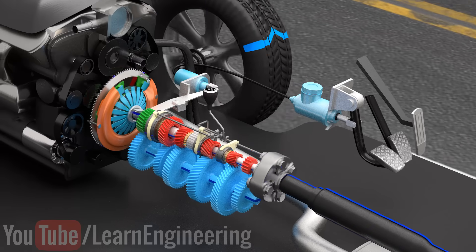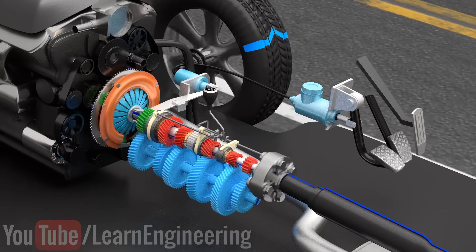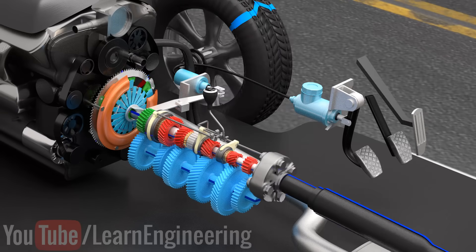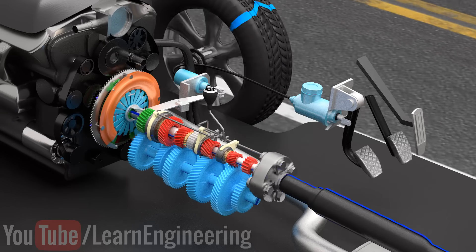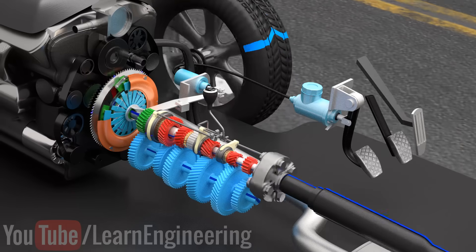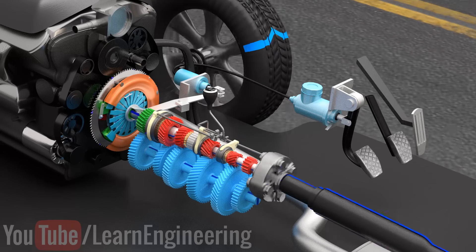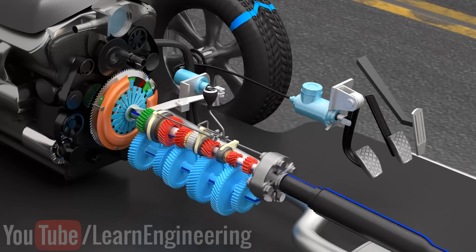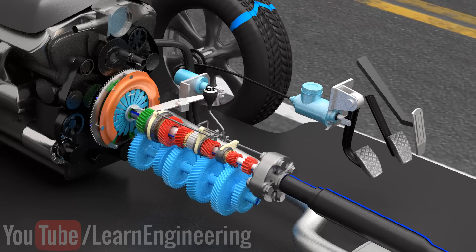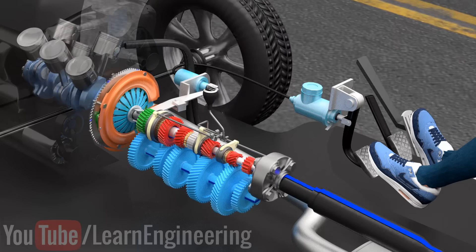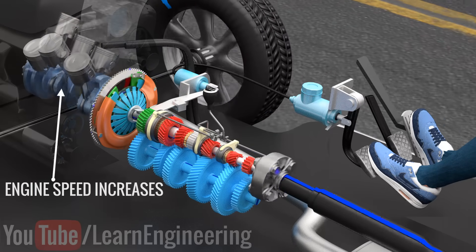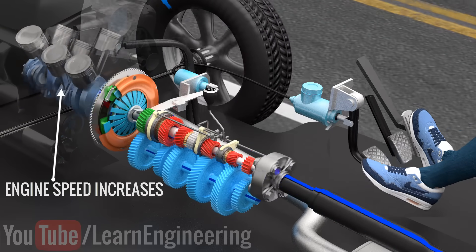Instead of using a lower gear, the driver presses the clutch pedal partially. This means that the engine is partially disengaged from the transmission and the load on the engine is greatly reduced. This instantly saves the engine from stalling. Now, whilst keeping the clutch pedal partially pressed, he presses the accelerator pedal further. This takes the engine speed up to a higher torque level, and now he can release the clutch pedal.